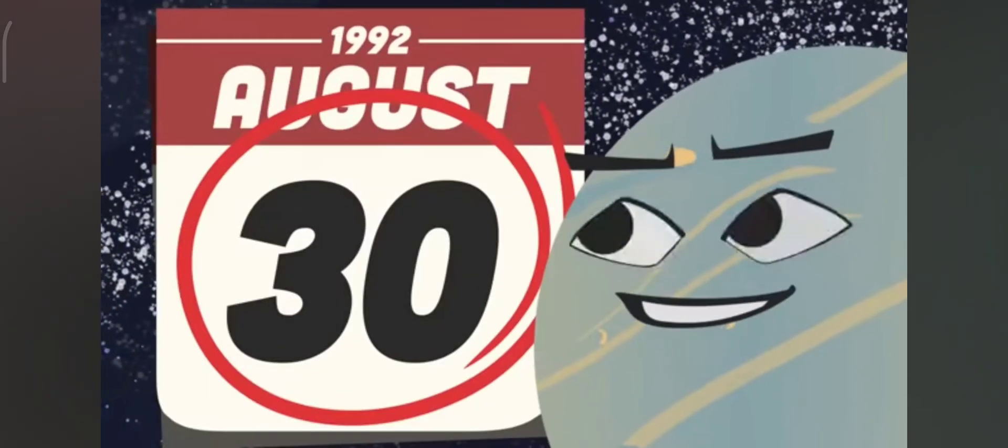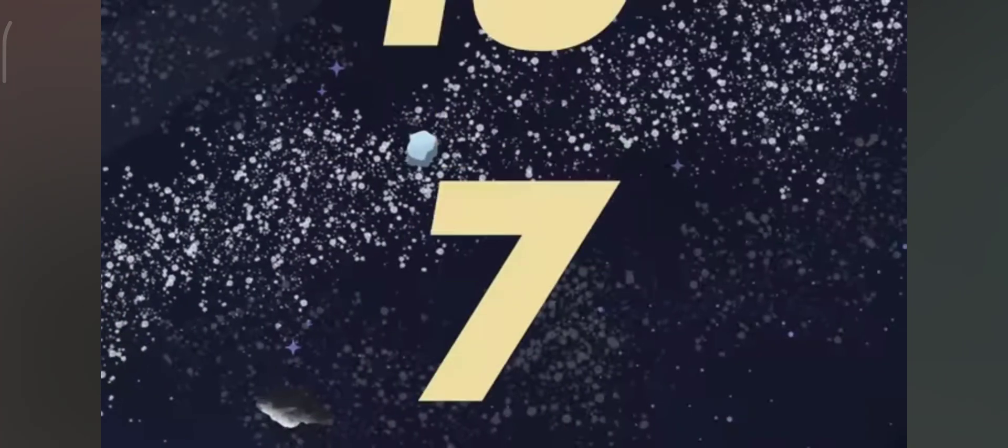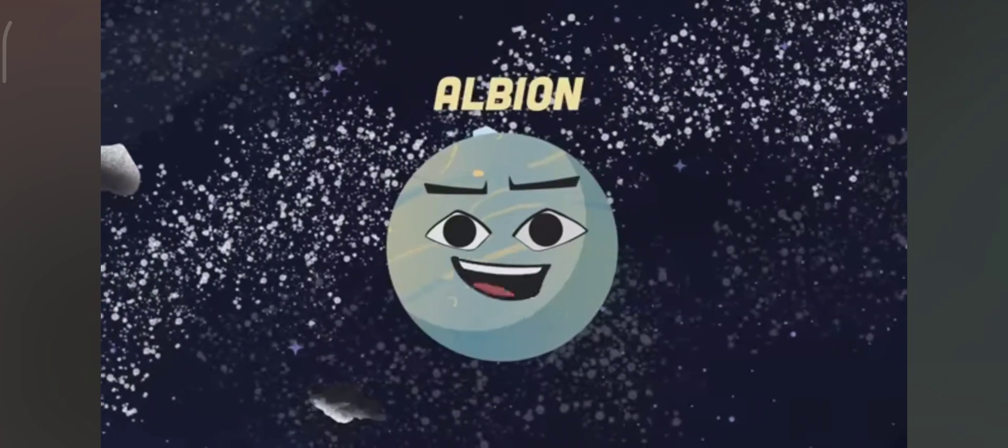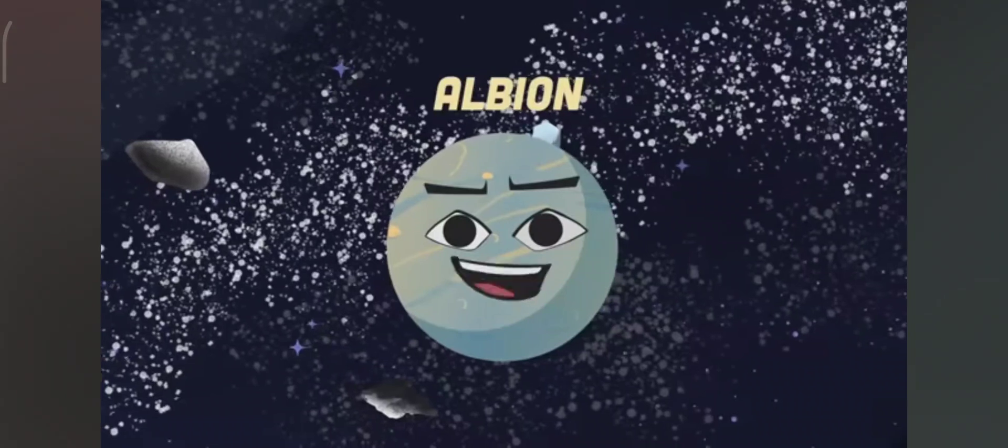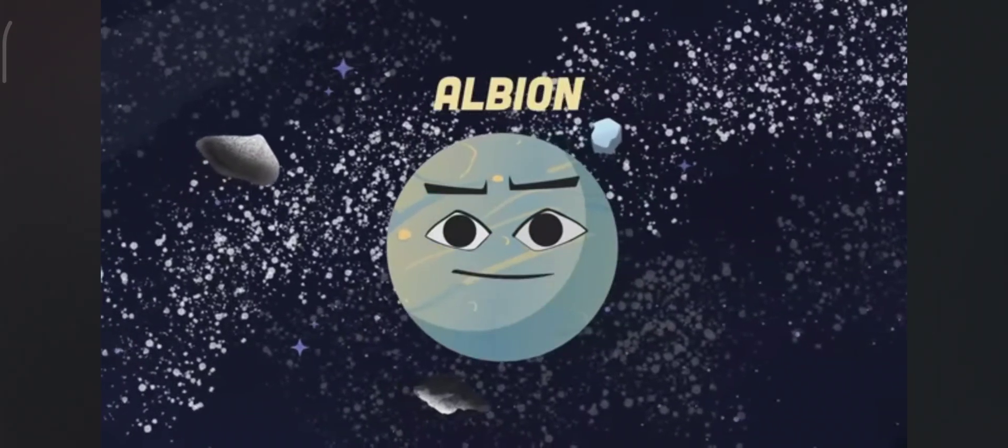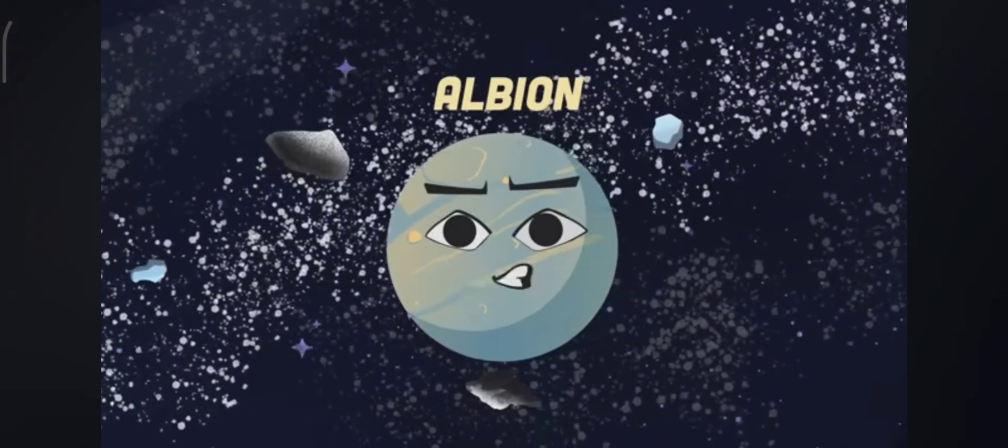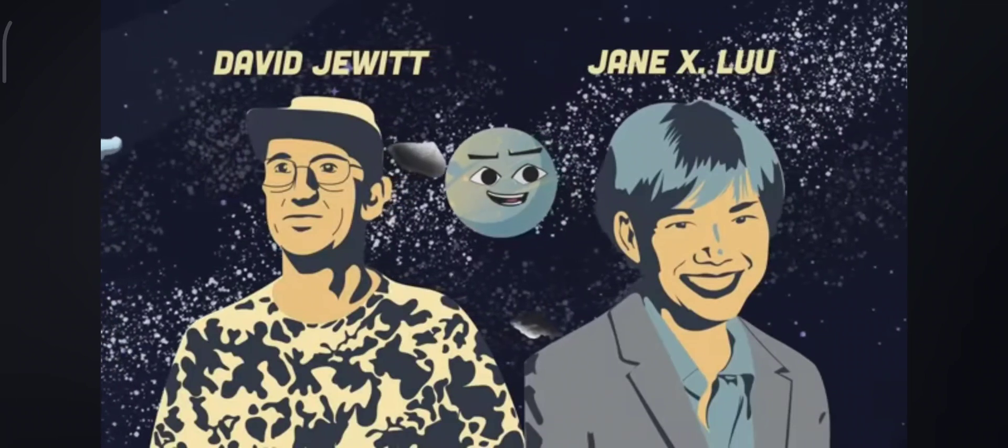Discovered on August 30th in 1992, 15760 Albion showed up out of the blue. My discovery was made by astronomers numbering two. They were named David Jewitt and Jane X. Luu.